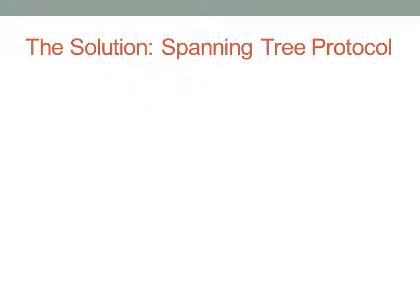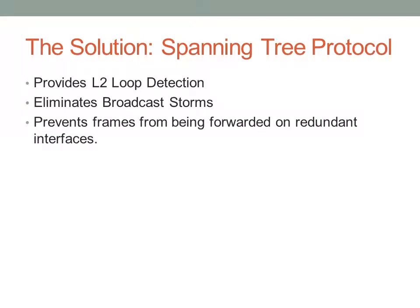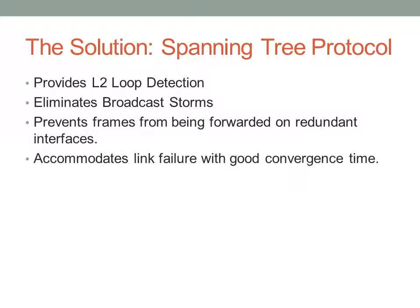Our goal with spanning tree is basically to provide layer two loop detection — we want to eliminate layer two loops, which will eliminate these broadcast storms. This also prevents frames from being forwarded on redundant interfaces and prevents what's known as ARP or MAC address table corruption. What happens is one host will send a frame, that frame will be flooded by one switch, and another switch might see that frame on more than one interface, so that host will appear to be on different links back and forth. The idea behind spanning tree is that it accommodates link failure: we allow these loops physically and eliminate them logically, but if a link fails we may want to bring the other portion of that loop back up. Spanning tree allows that with an okay convergence time.